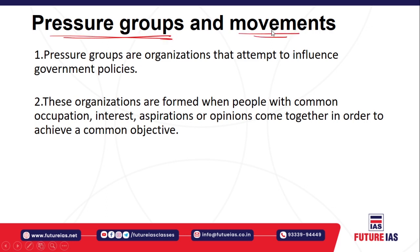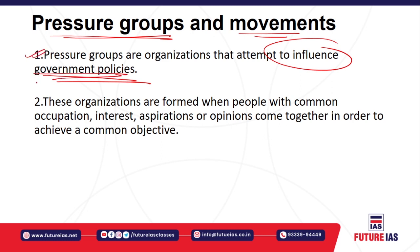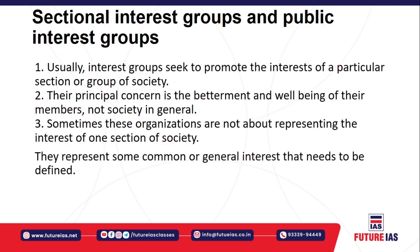Now let's understand pressure groups and movements. Pressure groups are not political parties — their main purpose is not to fight elections but to influence government policies. They don't aim to come to power or win elections; their motto is to influence government policies. They are formed when people share common interests, common occupations, common aspirations, or common opinions. When there is this commonness, they come together and form an association — that is called a pressure group.